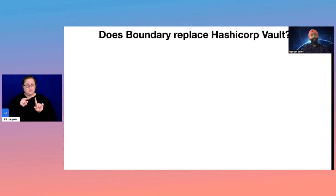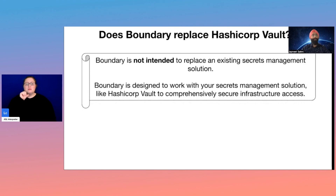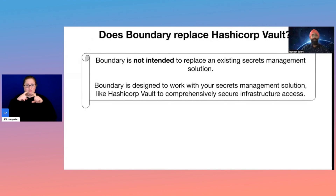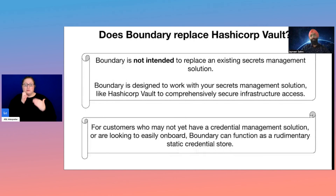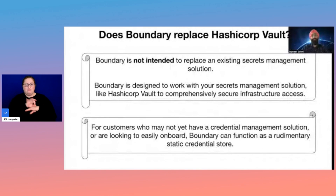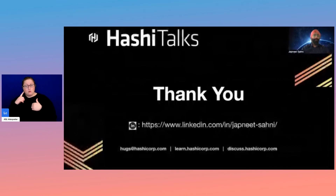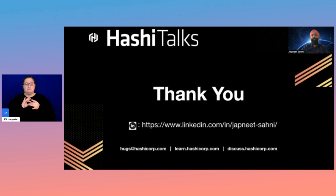We are almost at the end of our talk. Does Boundary replace HashiCorp Vault? The answer is no. Boundary is not intended to replace an existing secrets management solution. Boundary is designed to work with your secrets management solution like HashiCorp Vault to comprehensively secure infrastructure access. For customers who don't have a credential management solution or are looking to easily onboard, Boundary can function as a rudimentary static credential store. If your organization's vision is to move towards zero trust security, then HashiCorp Vault as a credential store is the way to go. You can reach me on LinkedIn at slash japneet-sahni. Thank you very much for joining.